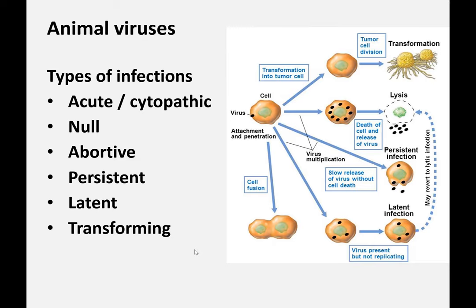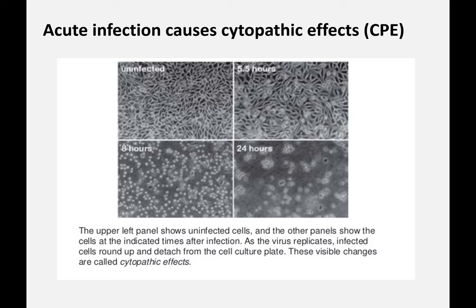The symptoms of a virus infection are a combination of the type of infection you're experiencing, what the virus does to the cell — we'll talk a bit about pathology — and your immune response. The first type of virus infection, which is most common, is called the acute infection, and it causes what we call CPE, or cytopathic effects.